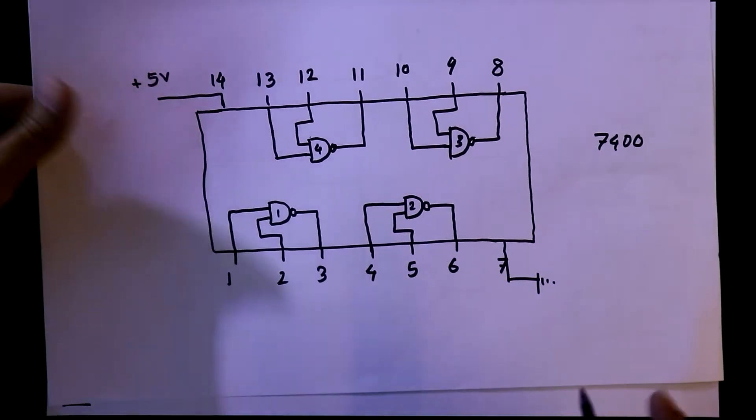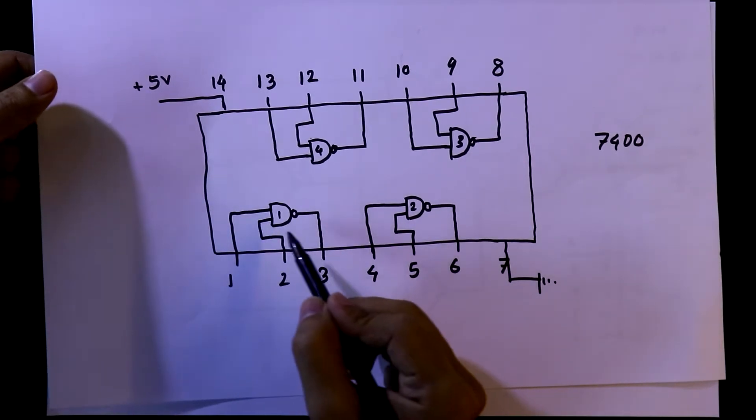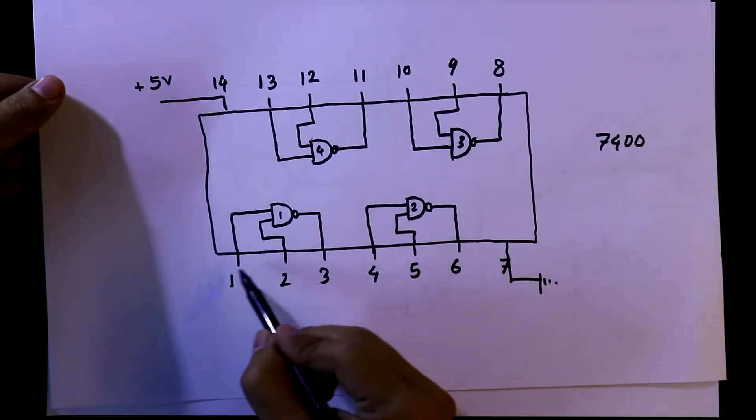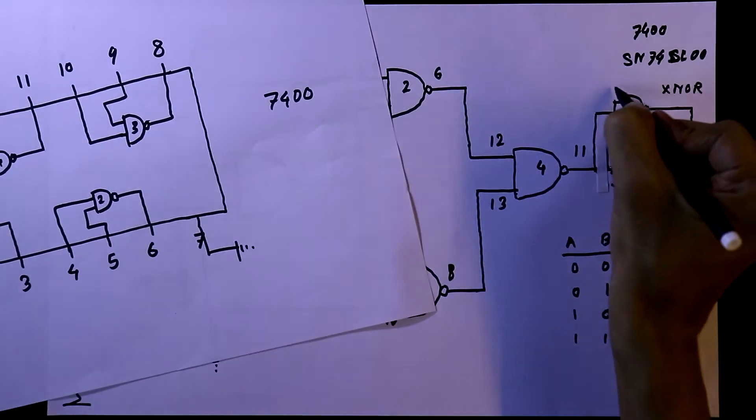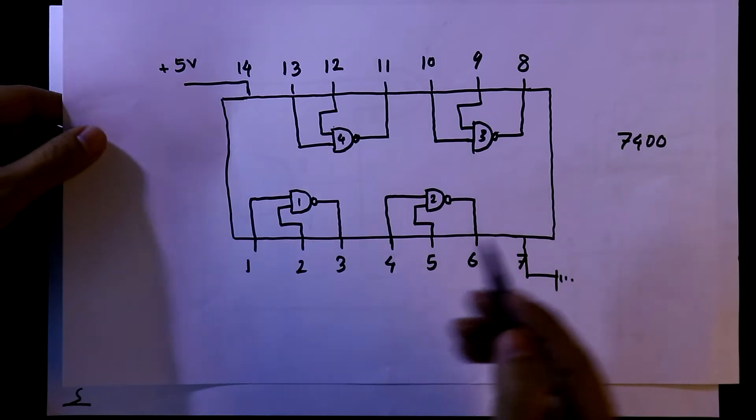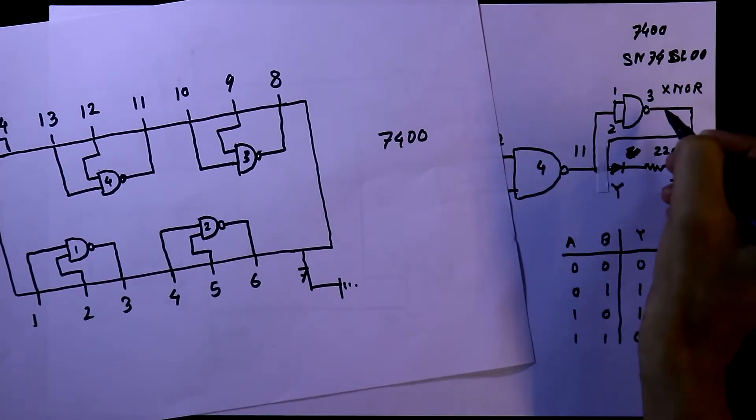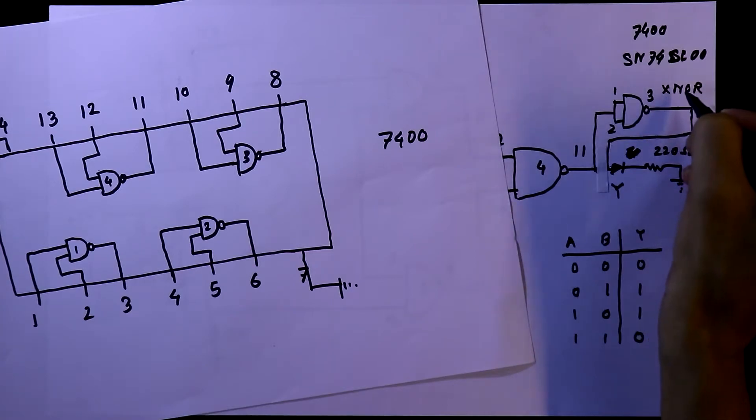And here is its pin diagram. We'll use the first NAND gate and its input is pin 1 and 2, and the output is pin number 3. So from pin number 3 we'll get the XNOR output.